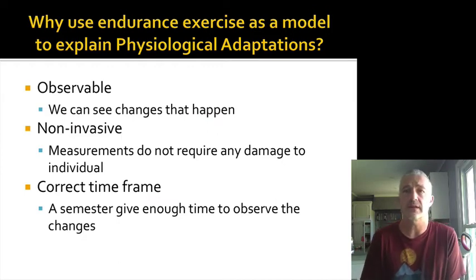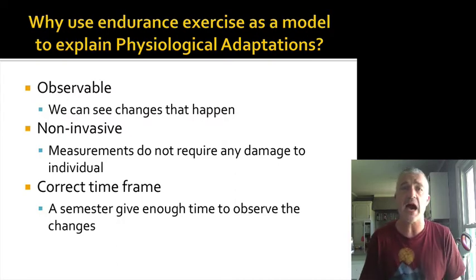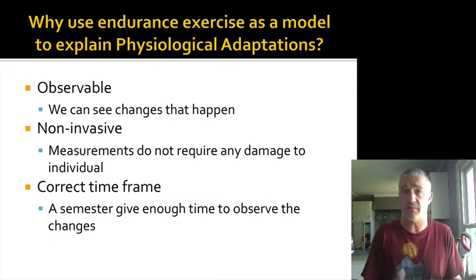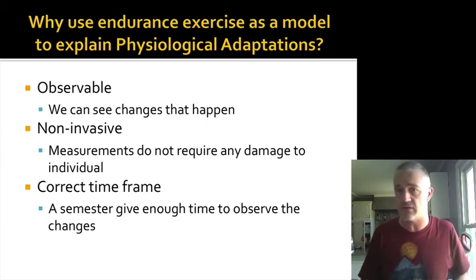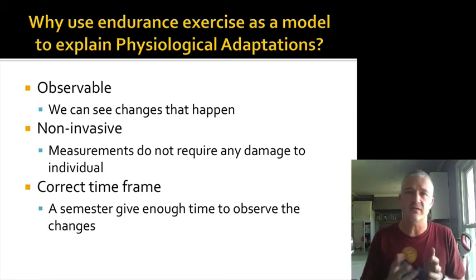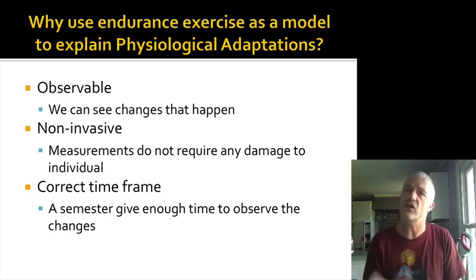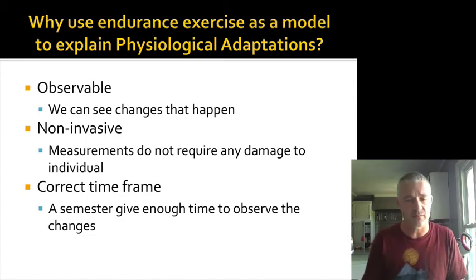Another reason for using endurance exercise is that at least some of the earlier adaptations happen within the timeframe of a semester. Some adaptations might take six to eight months, which isn't doable in a semester course. But some of the changes we see with endurance exercise happen in about six to eight weeks, so if you do a little training program you can actually see those changes happen.